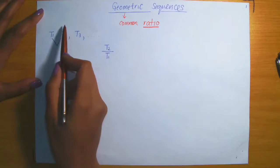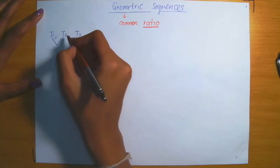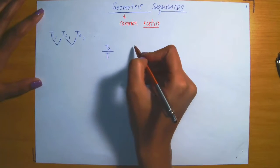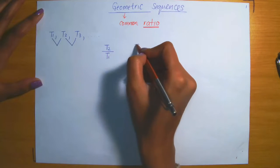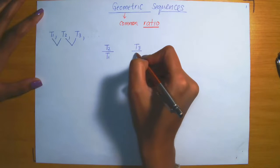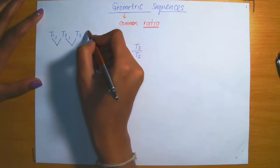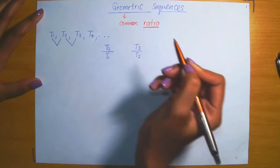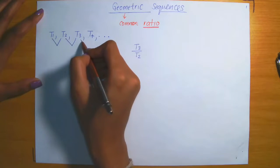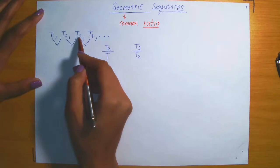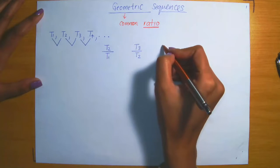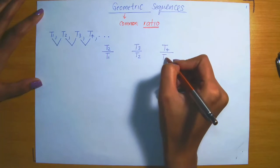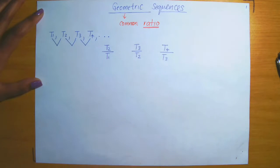Similarly, by looking at the next pair t2 and t3, the ratio between them is t3 divided by t2. And if I had a fourth term listed, then considering the ratio by the next pair of terms t3 and t4, I am simply referring to t4 divided by t3. So these are the ratios.